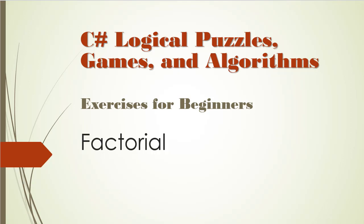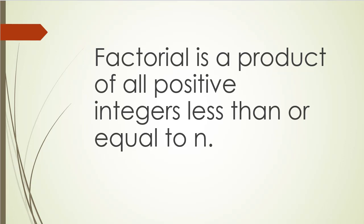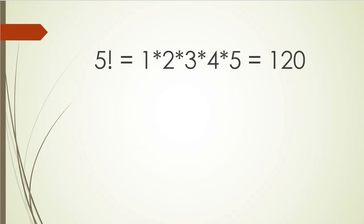Hello and welcome to C-Sharp Logical Puzzles, Games and Algorithms. In this video we are going to calculate a factorial. If you are not familiar with what factorial is, the official definition says that factorial is a product of all positive integers less than or equal to n. So if we take for example number 5, then 5 factorial — denoted with an exclamation point — equals 1 times 2 times 3 times 4 times 5, which equals 120.